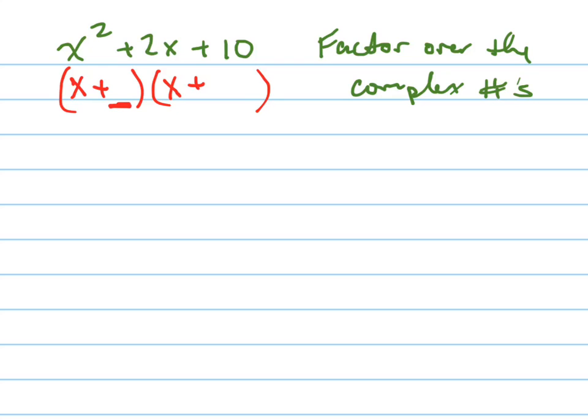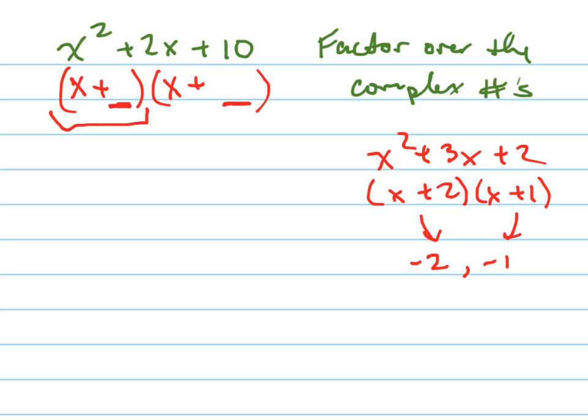And this right here would have been your zero, or I should say if we set this whole thing equal to zero, it would be your zero. Let me just show you an example of that. x² + 3x + 2 factors into (x + 2)(x + 1), which means -2 and -1 are your zeros. Because if I set these things equal to zero and solve them, I'd get -2 and -1.